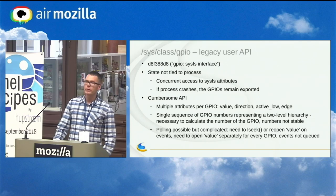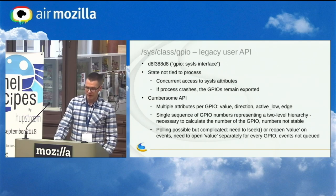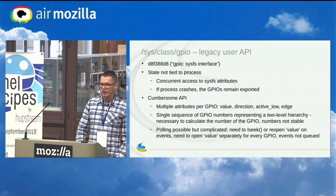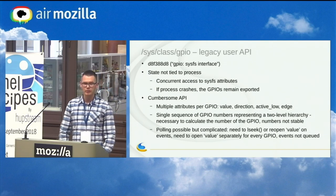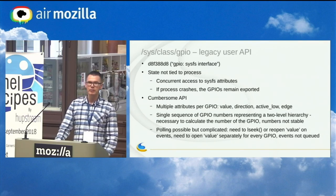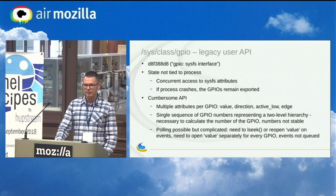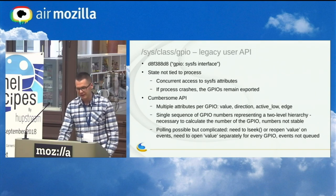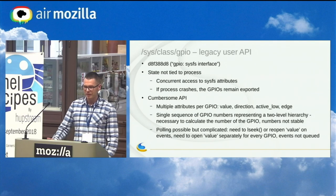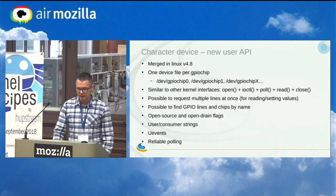There is also polling for line events and interrupts, which is possible with sysfs but quite complicated and unreliable. You can poll the value attributes for events, but when the poll function returns an event, you need to either reopen the value file descriptor or lseek to the beginning and read the value to know if it was a rising or falling edge event. These events were not queued — you would just re-read the value — so there was no buffering, meaning events could get lost.